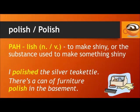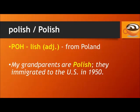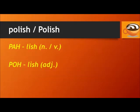Next, we have 'polish' and 'Polish.' 'Polish' means to make shiny, or the substance used to make something shiny. For example: I polished the silver tea kettle; there's a can of furniture polish in the basement. 'Polish' with a capital P is an adjective describing someone or something from Poland, and also a noun referring to the language spoken there. For example: my grandparents are Polish — they immigrated to the U.S. in 1950. Polish. Polish.